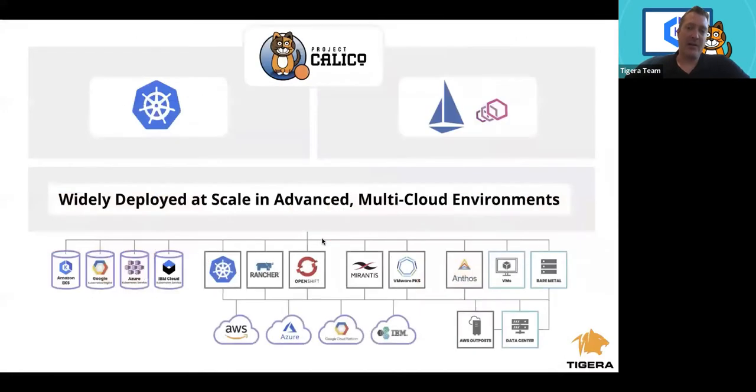Calico is an open source project that Tigera invented and maintains. We are big contributors to several open source projects, not just Project Calico, but we contribute to the Kubernetes project, to Istio, to Envoy. Project Calico is probably the most widely deployed networking and network security solution on the market today, running over 150,000 clusters.